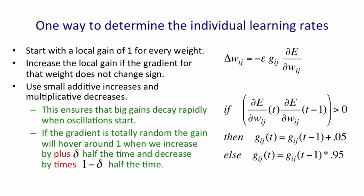So with random gradients, we'll hover around 1. If the gradient is consistently in the same direction, we can get much bigger than 1. If the gradient is consistently in opposite directions, which means we're oscillating across a ravine, we can get much smaller than 1.